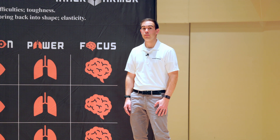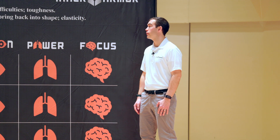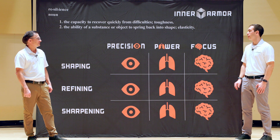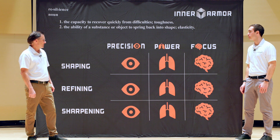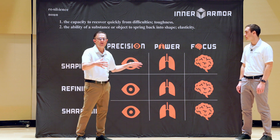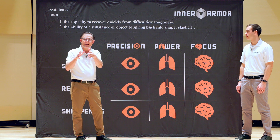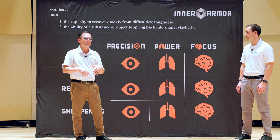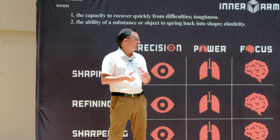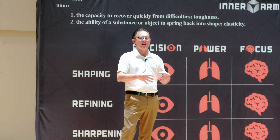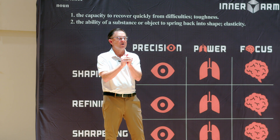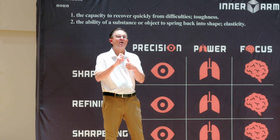Welcome to the Power Refining portion of the Resilience Matrix. In Power Refining, we've set the stage with your diaphragmatic breathing and creating that consistent oxygen flow to the heart. So now we're going to start looking at the heart — before we were looking at your breath, but remember the two are working together.